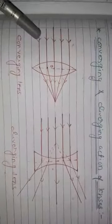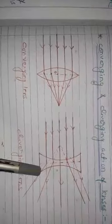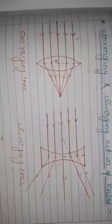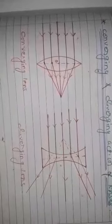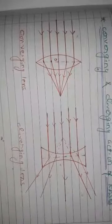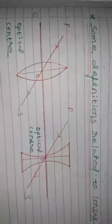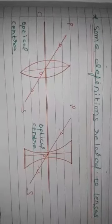In the converging action, all light rays coming parallel to the principal axis converge at a point. In the diverging action, all light rays coming parallel to the principal axis are diverged — that is why it is called the concave or diverging lens. This converging and diverging action can be explained by considering a lens made up of a large number of small prisms. In a convex lens, the base of the prism is towards the principal axis; in a concave lens, the base is away from the principal axis.